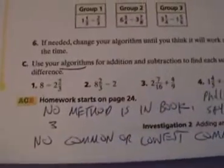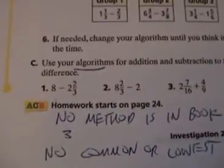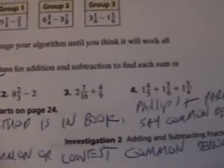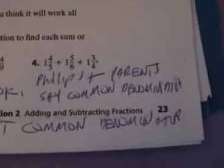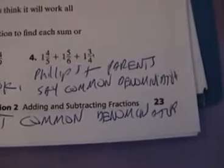They're supposed to guide the students to derive their own method. By the way, the method they come up with is, in fact, common denominators — it's the standard method. But the original edition, as my understanding, didn't even use the standard method. Now, use your algorithm for addition and subtraction to find each sum or difference. Of course, if you haven't figured out your method, you're going to be up a creek — there's no method in the book. Both the website and the parent letter say they're going to use common denominators, but lowest common denominator is not actually here.